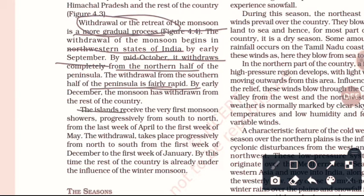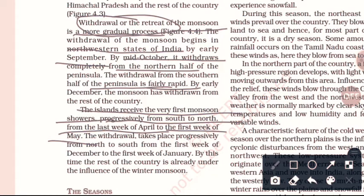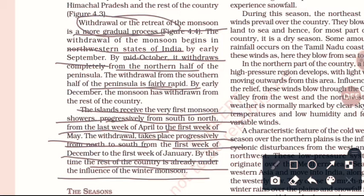The islands — Lakshadweep and Andaman & Nicobar — receive the very first monsoon showers, progressing from south to north from the last week of April to the first week of May. The withdrawal takes place progressively from north to south, from the first week of December to the first week of January, after which the rest of the country comes under the influence of the winter monsoon.